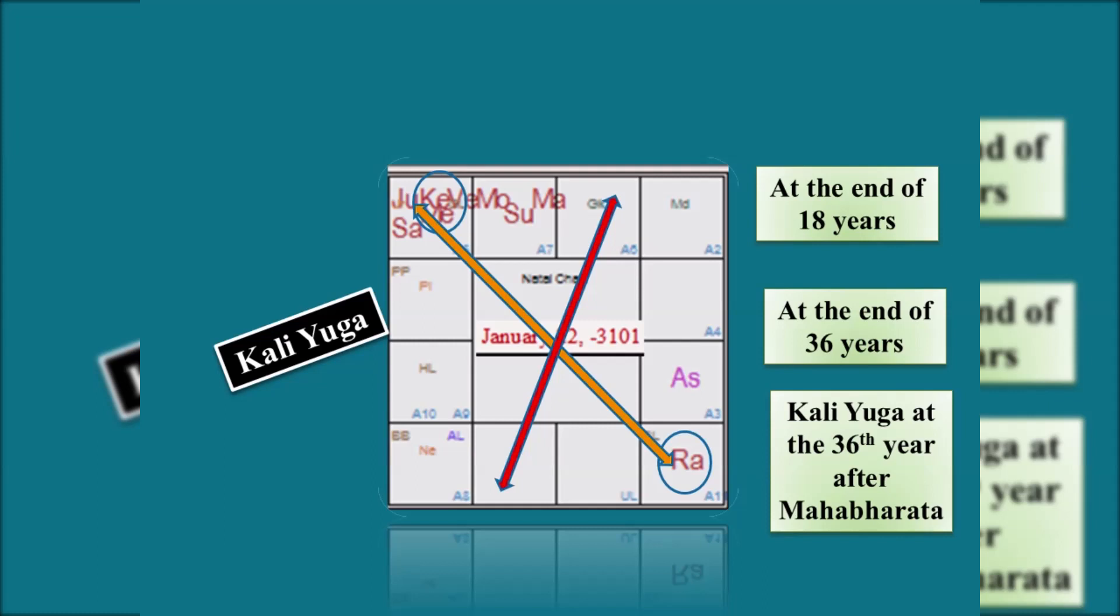The second incorrigible statement is that the eclipses have occurred within a gap of 13 days. That is 13 day eclipses. The two such eclipses have happened. Leave of the eclipses. You take up Amavasya and Purnami. Can Amavasya and Purnami happen on the 13th day?